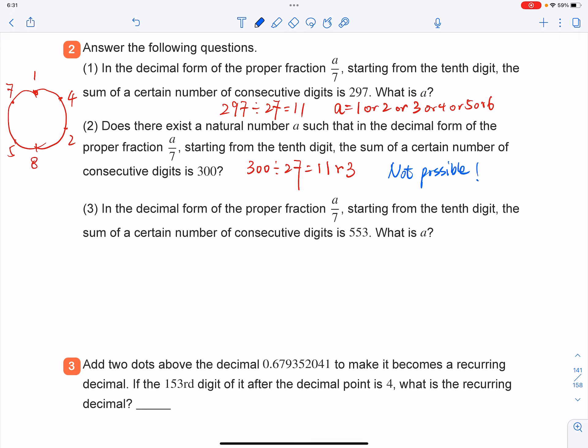And then the last one in the decimal, still the same question. Now this time, the sum is 553. So you're going to use the same number divided by 27. And let's see what we have. So let's do the long division.